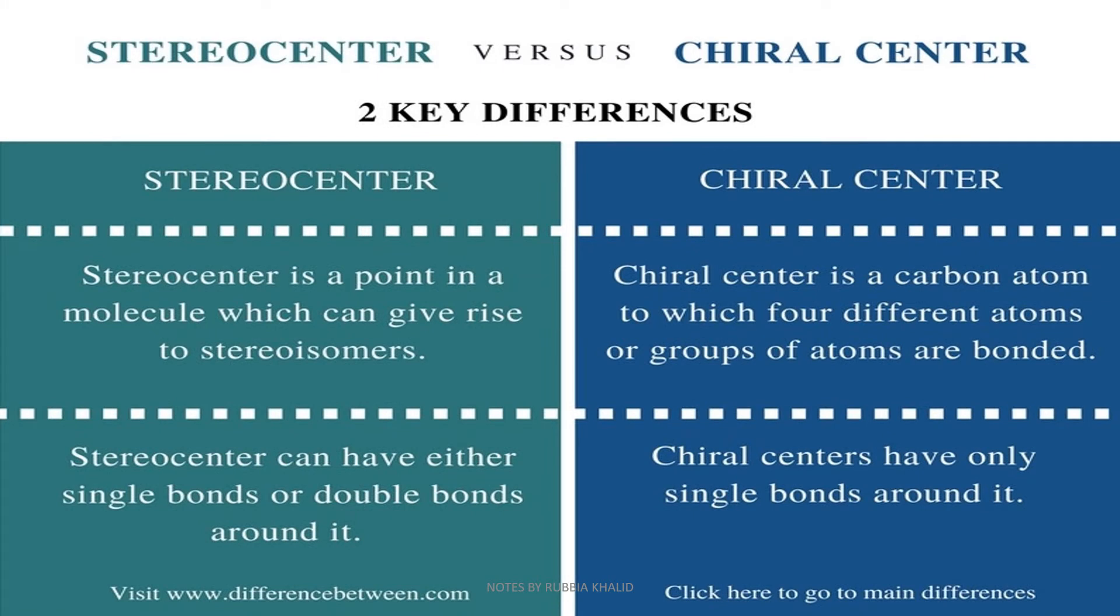Next, we see the difference between stereocenter and chiral center. The stereocenter is a point which gives rise to stereoisomers. Stereoisomers can have either single bond or double bond, while chiral center - in chiral center, carbon is attached to four different groups or atoms. Chiral centers have only single bonds around it.